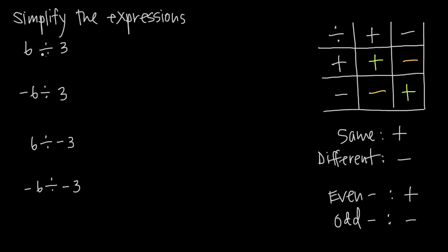So we have 6 divided by 3. This is a positive 6 and a positive 3 — both of our numbers are positive. If we look at our chart here, we have a positive and a positive, which is going to give us a positive result. That should make sense because the signs are the same, and we know that if the signs are the same, we'll get a positive result. So positive 6 divided by positive 3 is going to be a positive 2.